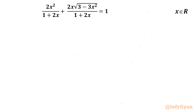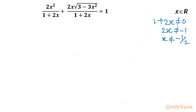The denominator cannot be zero, so 1 + 2x ≠ 0, which means 2x cannot equal −1, so x cannot be −1/2. Second, under the square root we have 3 − 3x², which should be greater than or equal to zero — it cannot be negative.